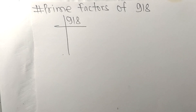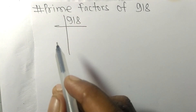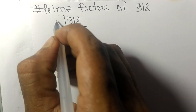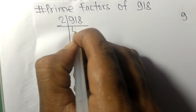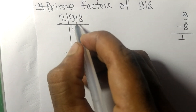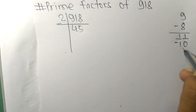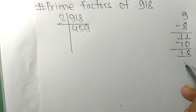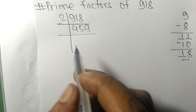Today we shall learn to find the prime factors of 918. Since it ends in an even number 8, it is divisible by 2. Dividing: 2 times 4 is 8, subtract to get 1; bring down 1 to get 11; 2 times 5 is 10, subtract to get 1; bring down 8 to get 18; 2 times 9 is 18. So now we get 459.